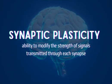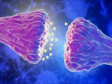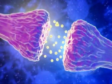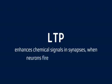Let's delve deeper into the two main forms of synaptic plasticity. The first is called long-term potentiation, or LTP. LTP enhances the effect of chemical signals in synapses when two neurons fire together repeatedly. This process essentially marks the neuron-firing combinations, or neuron-signalling pathways, that are important for a particular task.